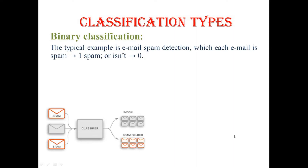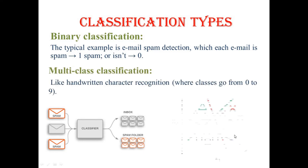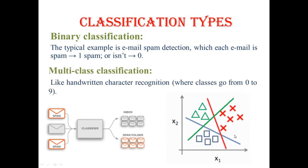The first type is binary classification — for example, spam or non-spam, or boy or girl. If we are classifying into more than two types, it is multi-class classification. A good example of multi-class classification is handwritten character recognition, where the classes go from zero to nine, so multiple classes are there.